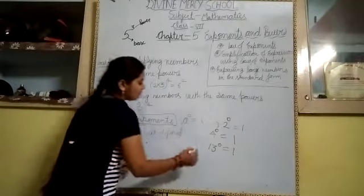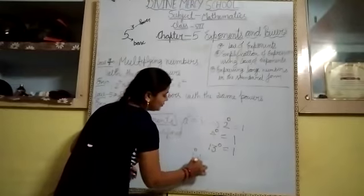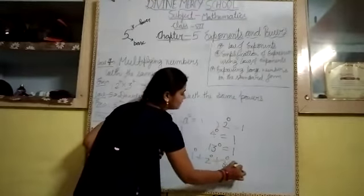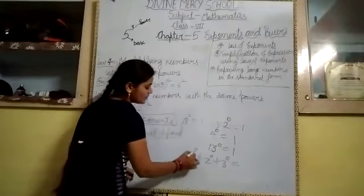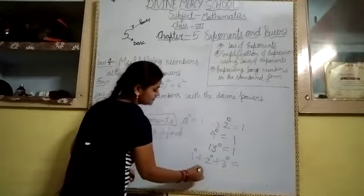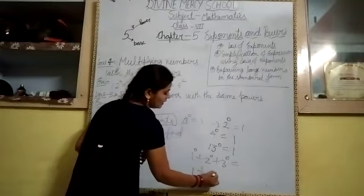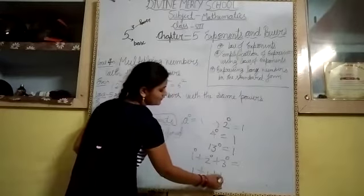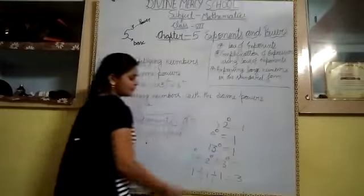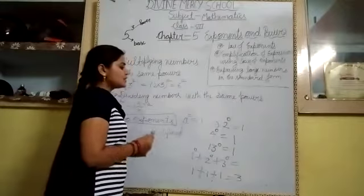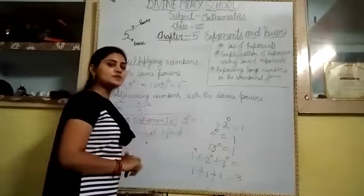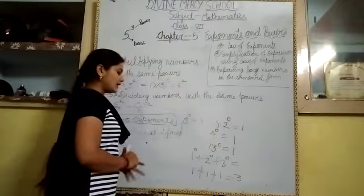Suppose this expression is there: one power zero plus two power zero plus three power zero. Then we replace each term: one power zero equals one, two power zero equals one, three power zero equals one. So one plus one plus one equals three. The answer is three. Any digit raised to the power zero gives the value one.